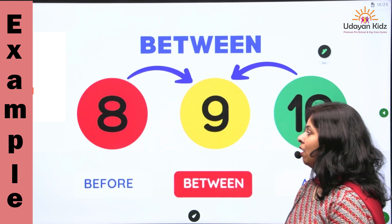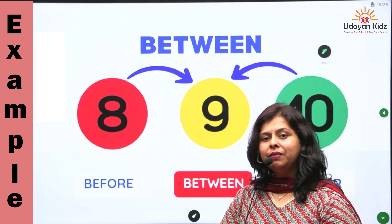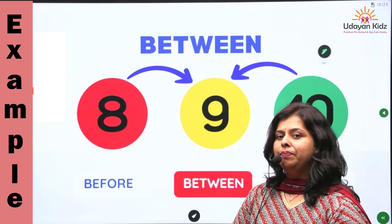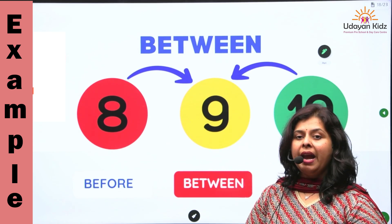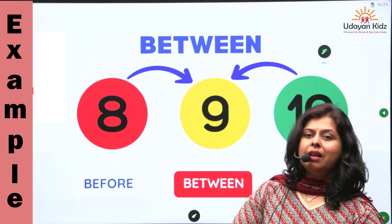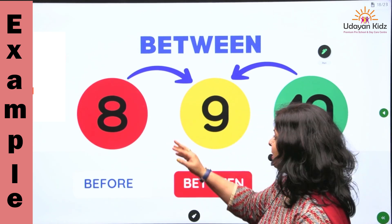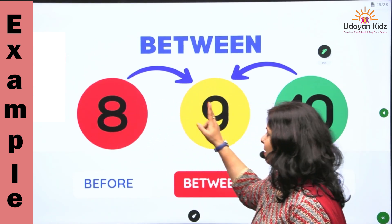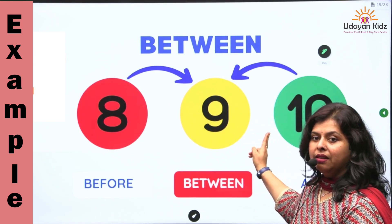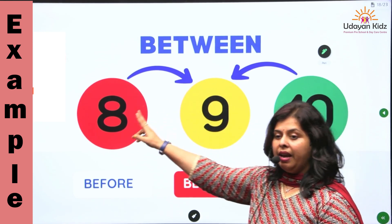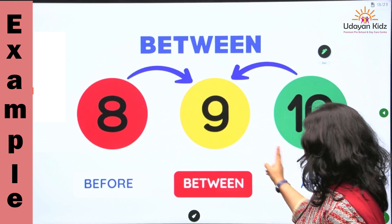Next, where does number nine come? Number nine comes in between number eight and number ten. Let's count it: 8, 9, 10. 8, 9, 10.